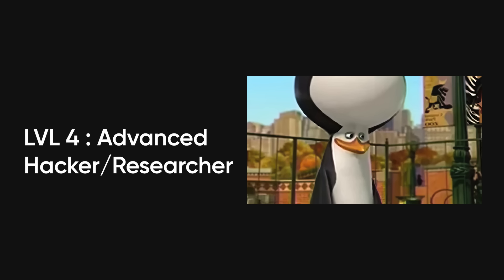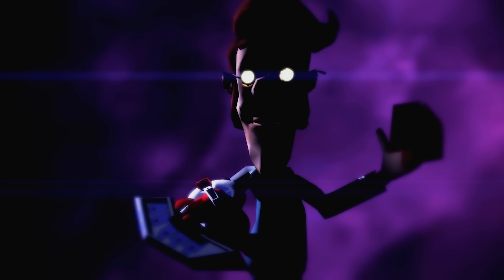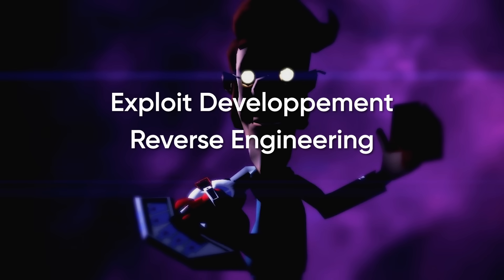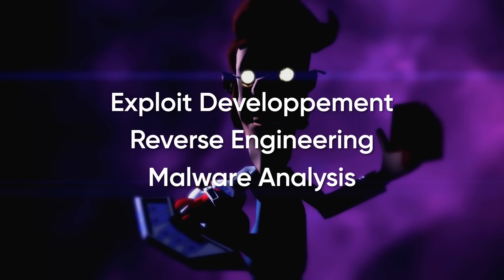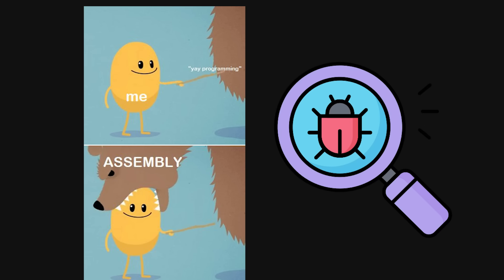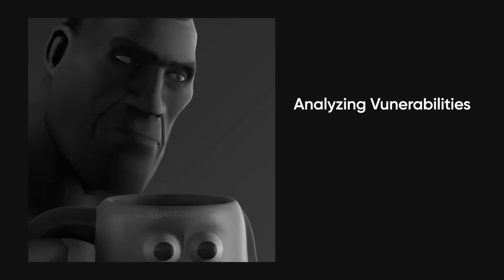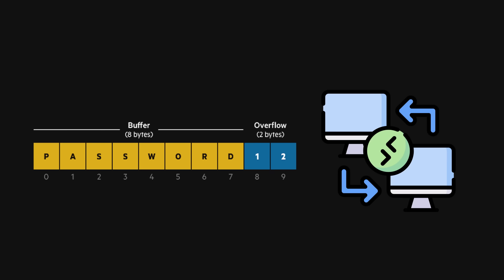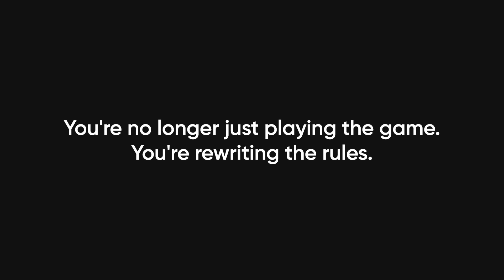Level four: advanced hacker and researcher. You've entered the dark realms of exploit development, reverse engineering, and malware analysis. You don't just use exploits — you write them. You're comfortable in assembly language and can debug a binary like it's second nature. Security isn't just a skill at this level; it's an obsession. You're spending late nights analyzing vulnerabilities, reading white papers, and trying to figure out how someone just turned a buffer overflow into full remote code execution. You're no longer just playing the game — you're rewriting the rules.